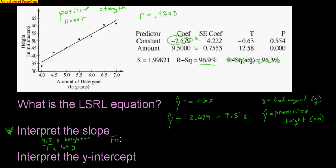So how can I interpret the slope? Well, it tells me for every 1 gram of detergent. Remember, this is that script I've got to follow. So the predicted height increases, because it is positive, increases by 9.5 millimeters. So make sure you remember that script. For every 1 gram of detergent, the predicted height increases by 9.5 millimeters.